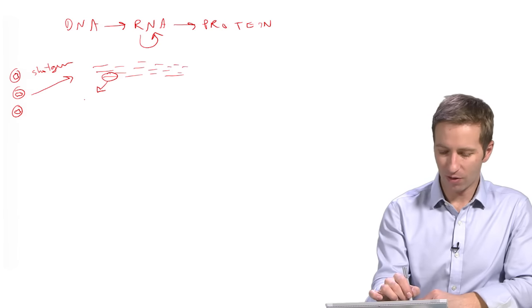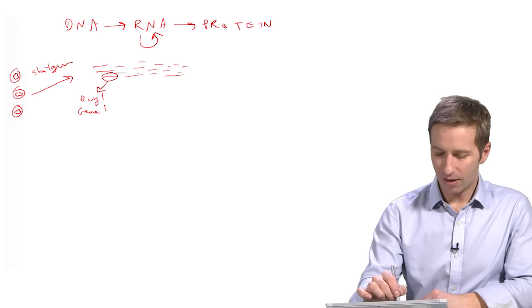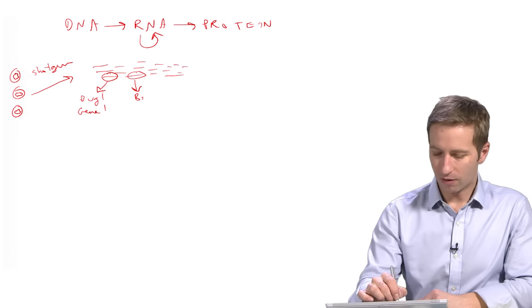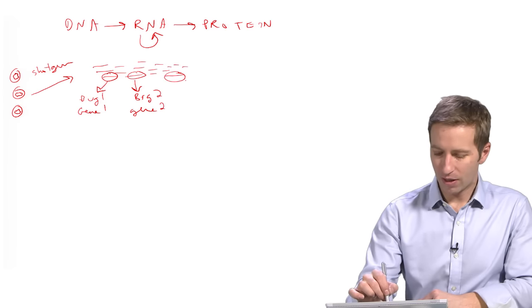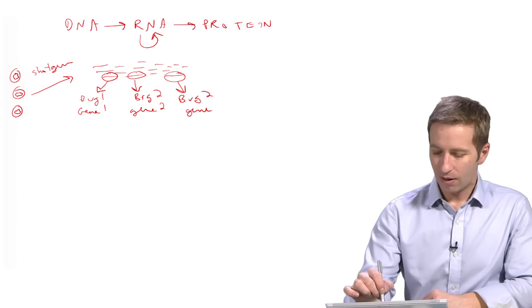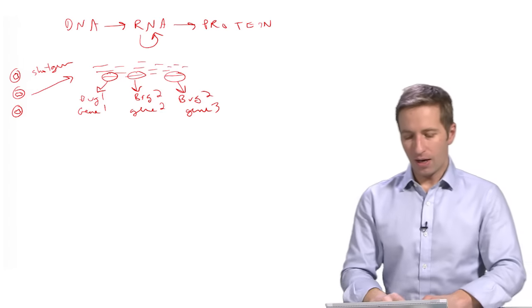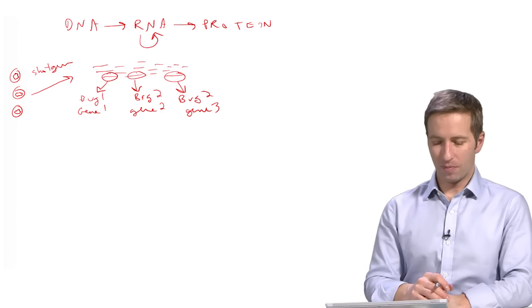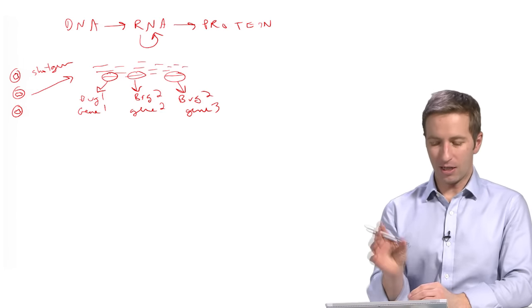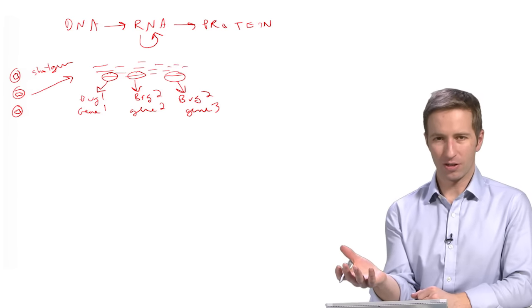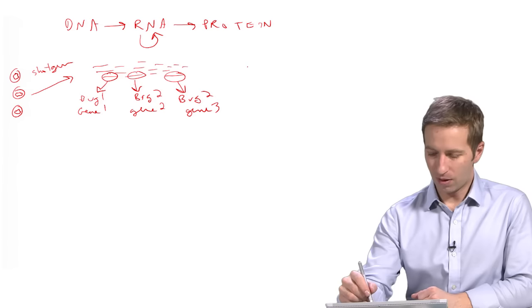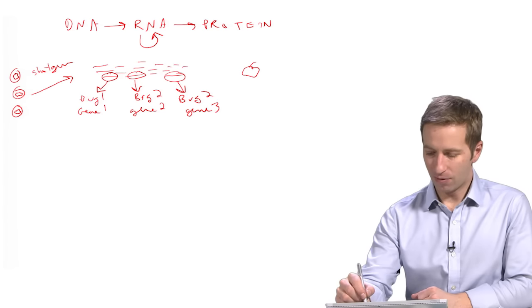So that piece could come from say bug one, gene one, and this piece might come from bug two, gene two, and this piece might come from bug two again but a different gene, gene three. What we're left with is basically each sequence comes from a different gene, potentially a different bug, and what we're trying to do then is compare apples versus oranges.